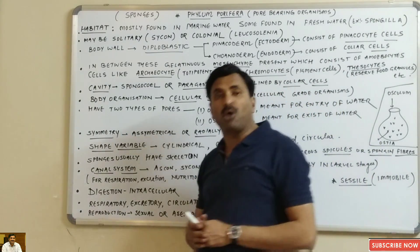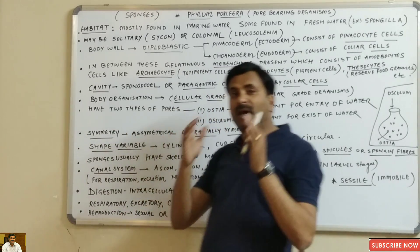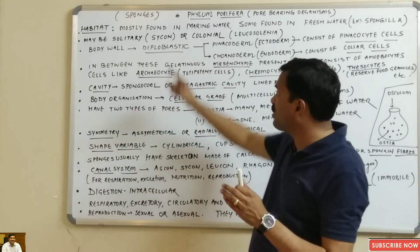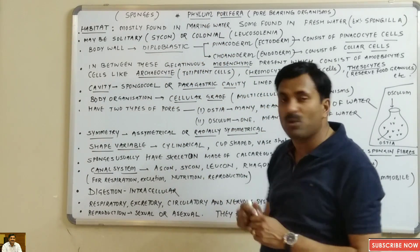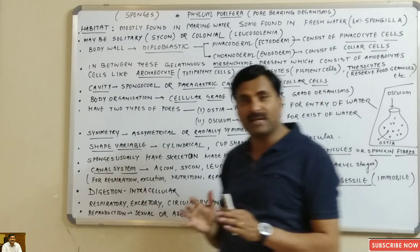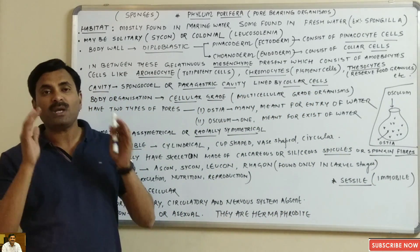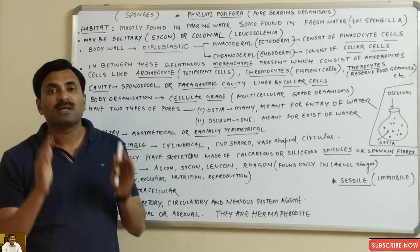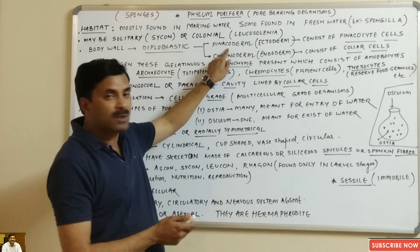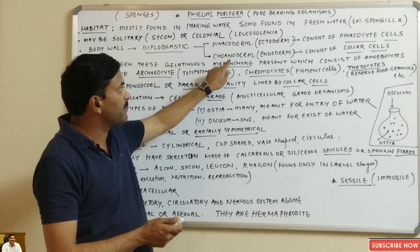If we talk about the body wall — how many layers are there on their body — they are diploblastic. Always remember that porifers are diploblastic, meaning they have two body layers. The outer layer is called ectoderm and the inner one is known as endoderm, also called pinacoderm and choanoderm.